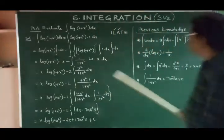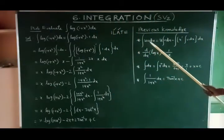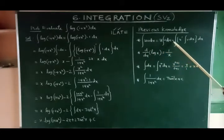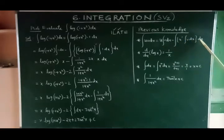Here, we have already learnt about this formula. Integral uv dx equals first function integral second function dx minus overall integration, differentiation of first function integral second function dx over dx.